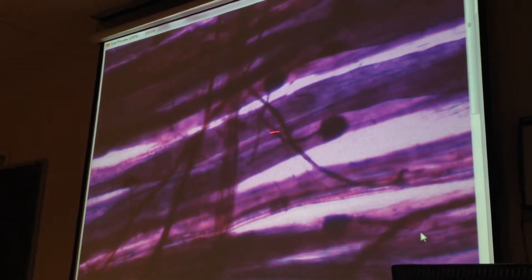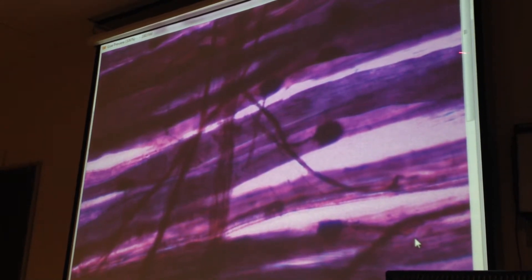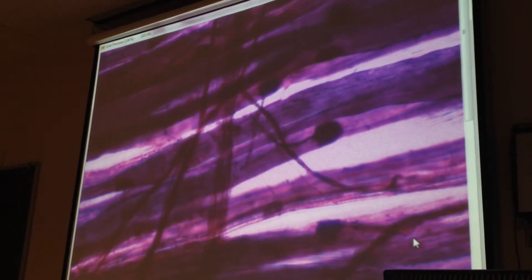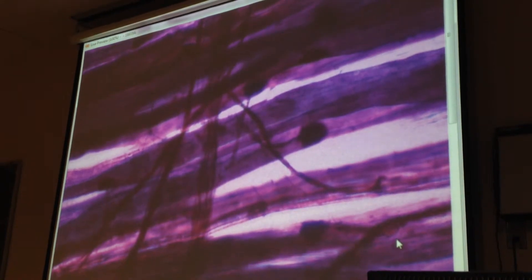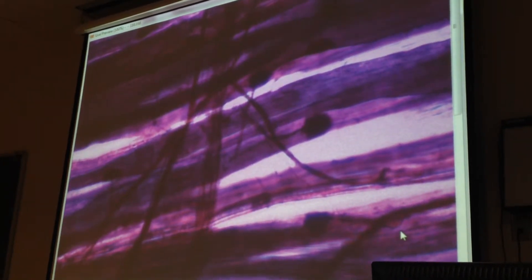So what's this structure here that I'm outlining? Skeletal muscle cell. Yeah, skeletal muscle cell or skeletal muscle fiber. Don't forget to say skeletal, right, because it's not smooth muscle, it's not cardiac muscle. I won't know what kind of muscle you're talking about.